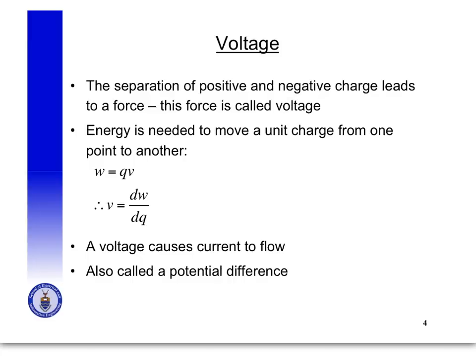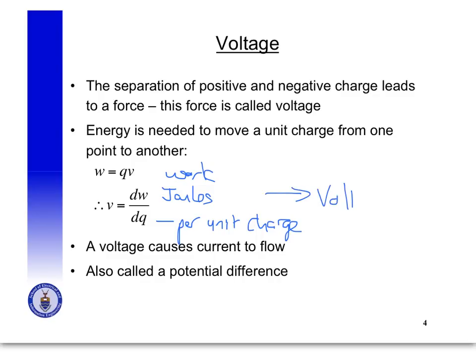The separation of positive and negative charge leads to a force, and this force is called voltage. Voltage is the energy that is needed to move a unit charge from one point to another — it is the work needed in joules per unit charge. This gives us volts, denoted with a capital letter V. Voltage causes current to flow, and voltage is also called a potential difference. It is measured between two points because it measures the potential difference between those two points.